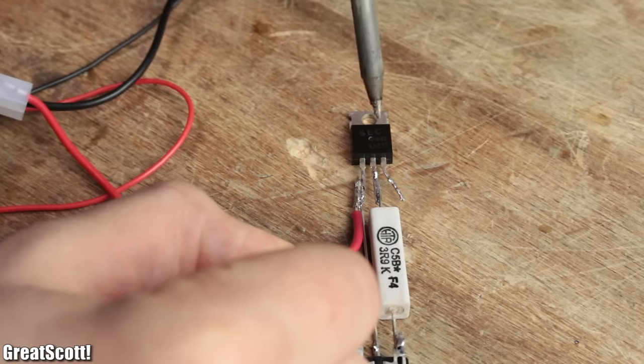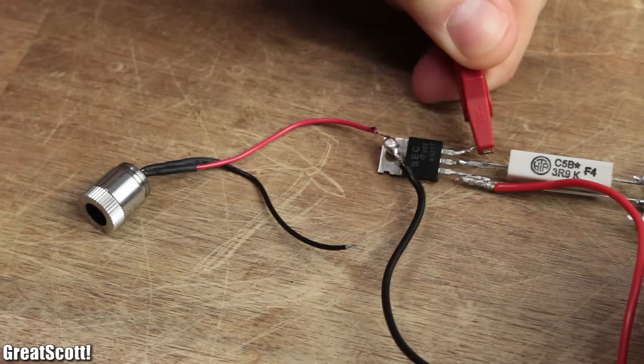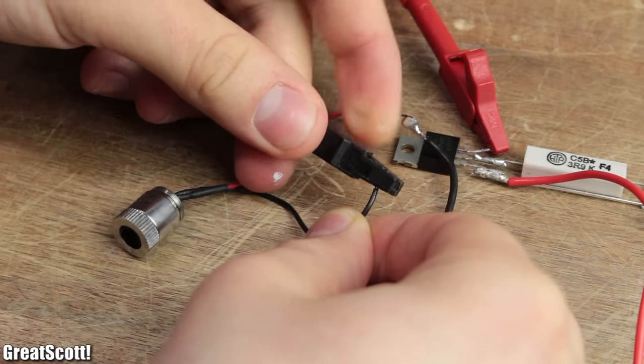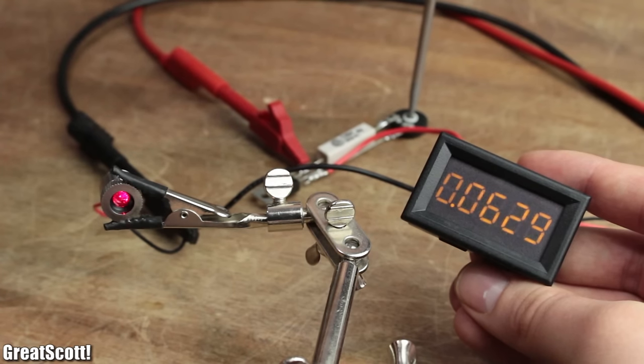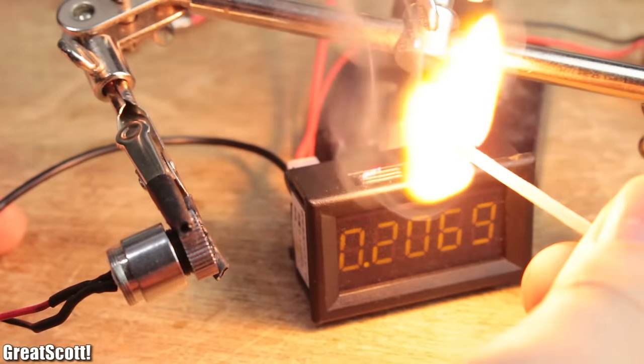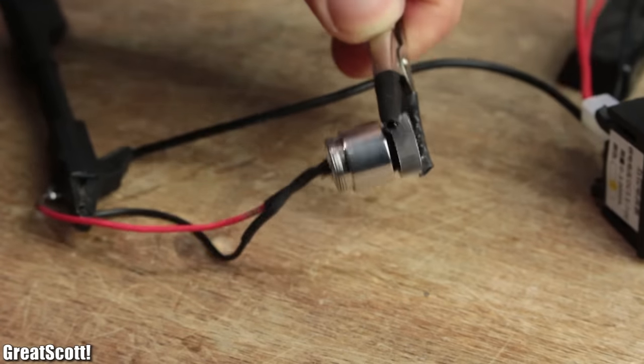I also hooked up a current meter in series to the loads and tested the finished circuit with the laser diode from a DVD burner. And just as expected, the current adjustment works and the diode ignites a match without a problem.